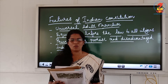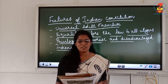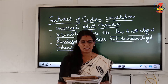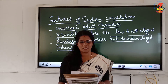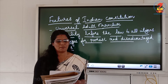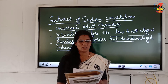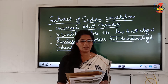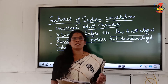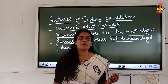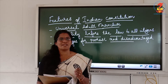Now let us see the important features of the Indian constitution. First point: universal adult franchise. All Indians got the right to vote. People above 21 years would be allowed to vote in state and national elections. Underline this point — earlier, Indian people had not been given the right to choose their leaders.